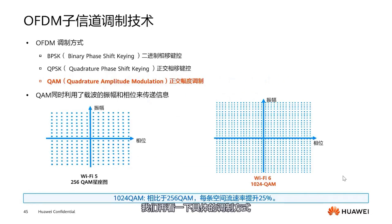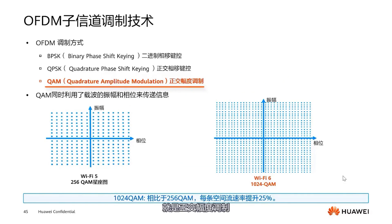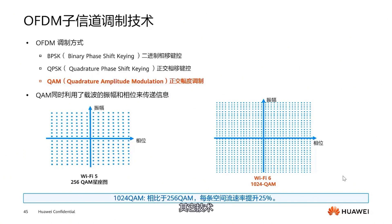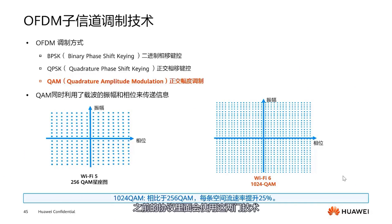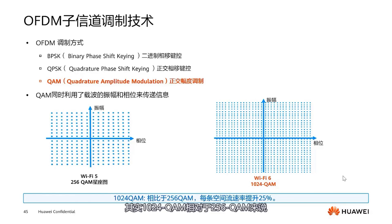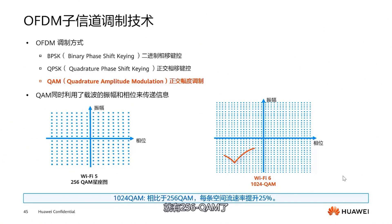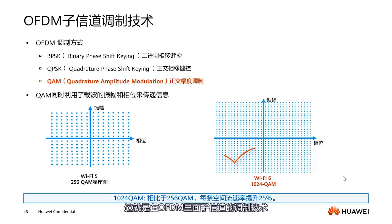Let's look further at the specific modulation method. OFDM uses QAM — Quadrature Amplitude Modulation. Currently we mainly use this technology. Other technologies like BPSK and QPSK are less used now, though they were used in previous protocols. For QAM, you can see that 1,024 QAM compared to 256 QAM increases each spatial stream's rate by 25%. This is the modulation technique for sub-channels in OFDM, utilizing amplitude and phase to achieve the transmission of information.